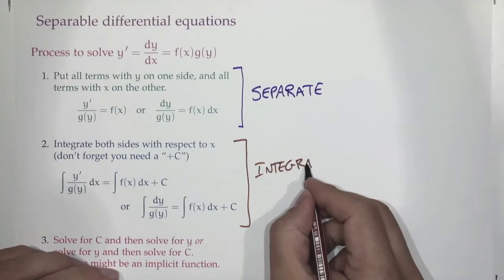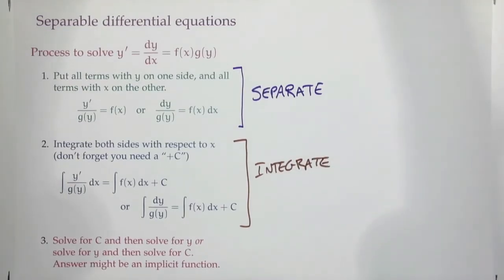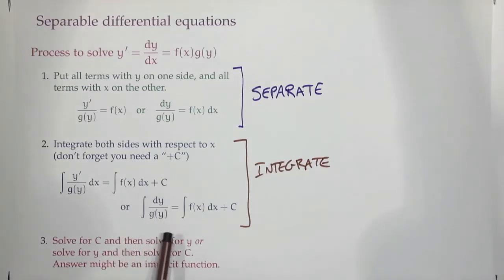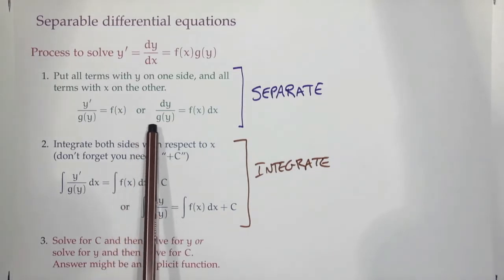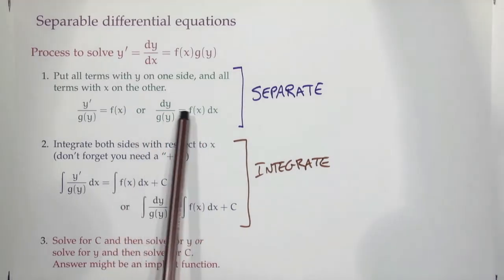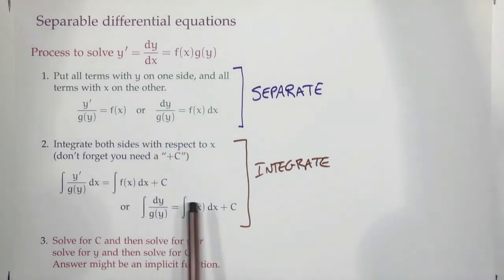You simply integrate both sides. You find the integral of 1/g(y) dy, which equals the integral of f(x) dx. What we're really exploiting here is that if two functions agree, then their antiderivatives agree up to a plus C.